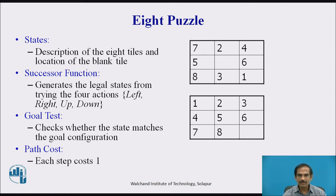The second problem is the 8-puzzle problem, where we have state descriptions of the 8 tiles and the location of the blank tile. We have successor functions generating all legal states by trying four movements of the tiles: left, right, up, and down. Then we perform a goal test checking whether the state matches the goal configuration, and we set the path cost to 1.